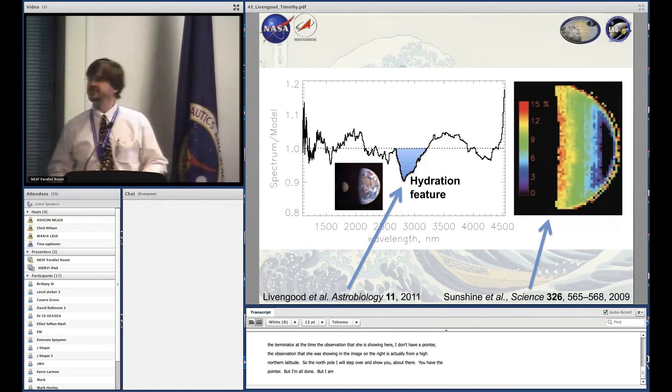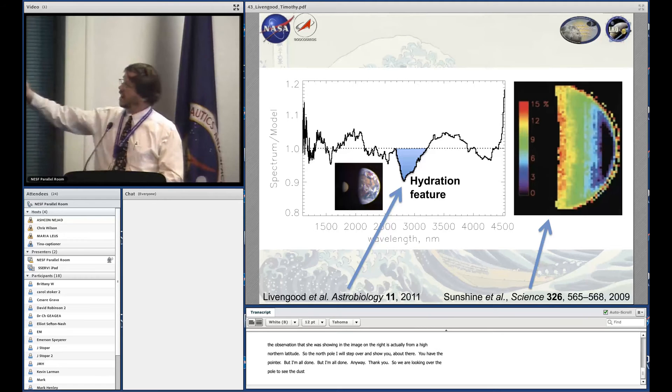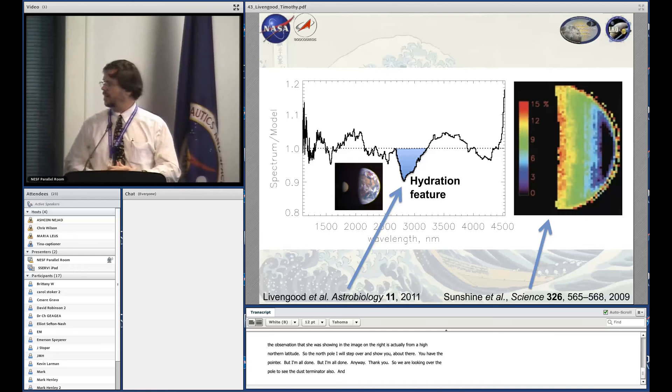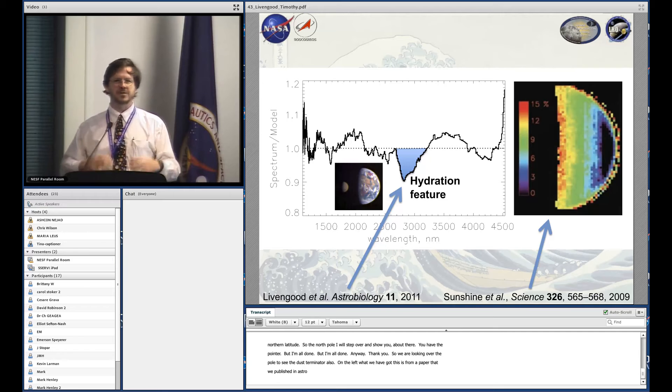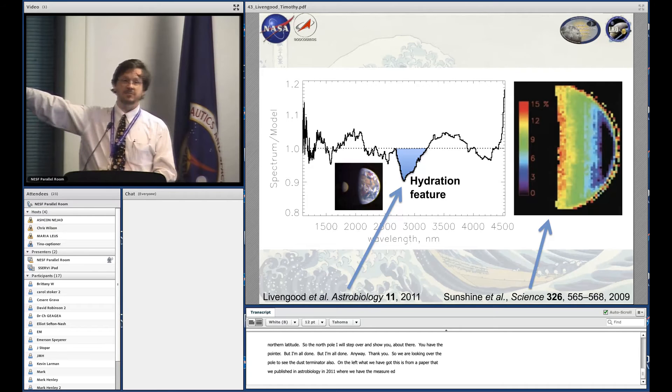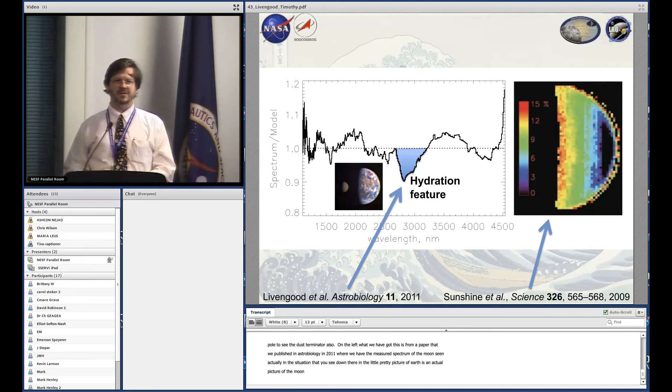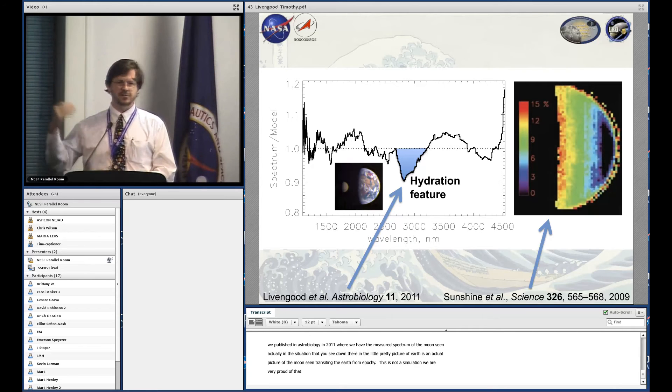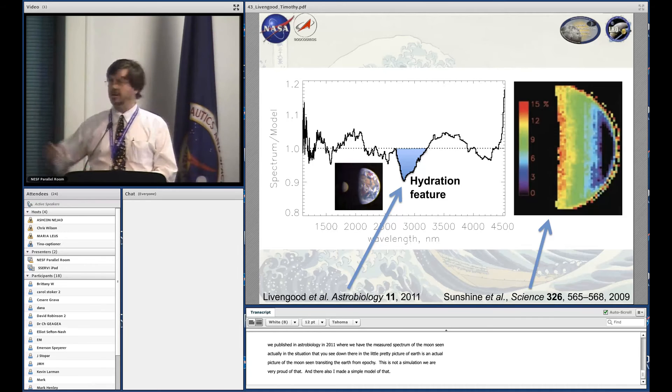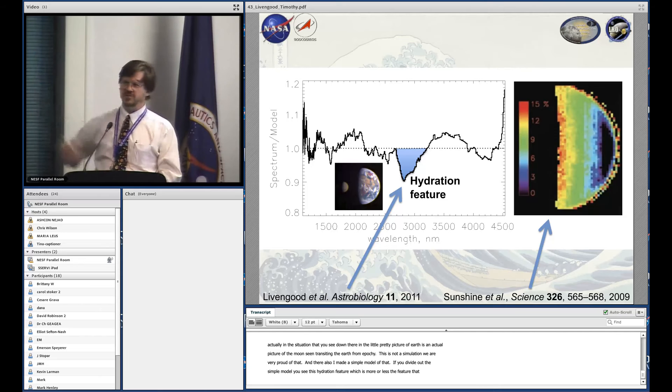We were looking over the pole to see the dusk terminator. What we've got here is from a paper we published in Astrobiology in 2011, where we have the measured spectrum of the moon seen in the situation shown in the little picture of the earth. This is an actual picture of the moon transiting the earth from EPOXI, not a simulation. I made a simple model, and if you divide out the simple model you see this hydration feature.